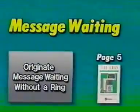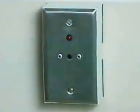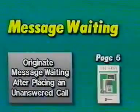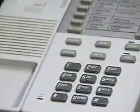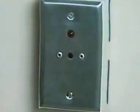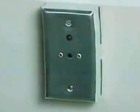Let's review samples of message waiting functions. Next, we'll show how to originate message waiting without a ring. To originate message waiting without a ring, lift the handset, press star star and dial the desired station. The message waiting lamp illuminates. To originate message waiting after placing an unanswered call, lift the handset, dial the desired station, and after receiving no answer, press star star. To extinguish the message waiting lamp, lift the handset, press star pound and the desired station. The message waiting lamp goes out.